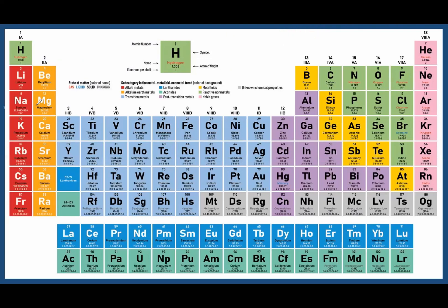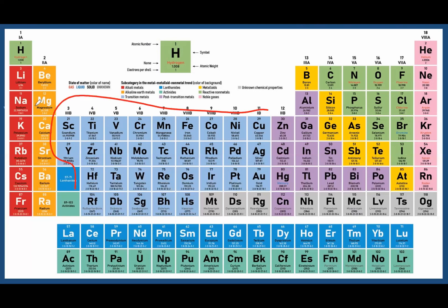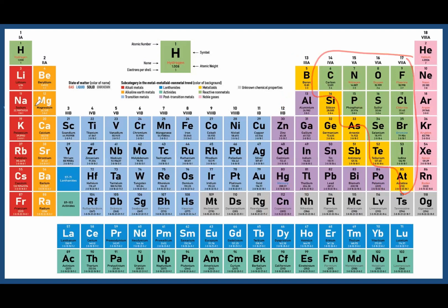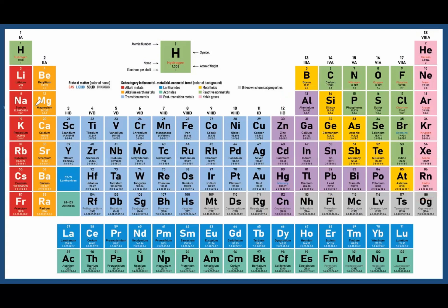The different colors in the periodic table indicate element categories. Red — alkali metals. Orange — alkaline earth metals. Light blue — transition metals. Violet — post-transition metals. Dark yellow — metalloids. Light green — reactive non-metals. Pink — noble gases, which are the non-reactive gases in the periodic table.